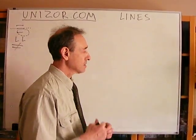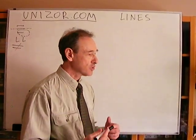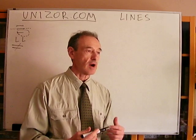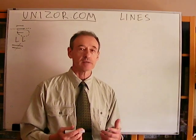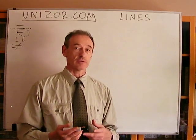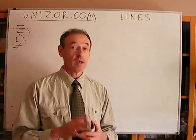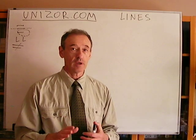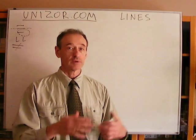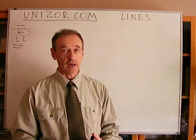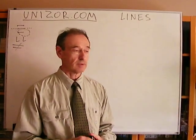Five axioms to be exact. Anything which satisfies these axioms, any objects which satisfy these axioms, in theory, can be called points and lines on the plane.